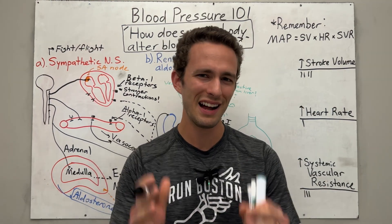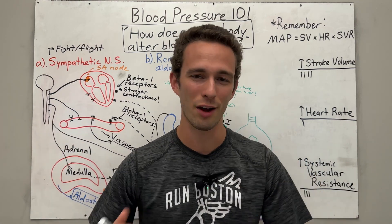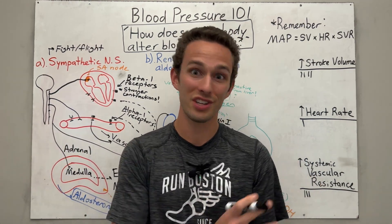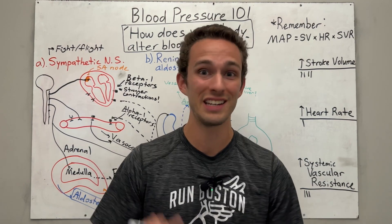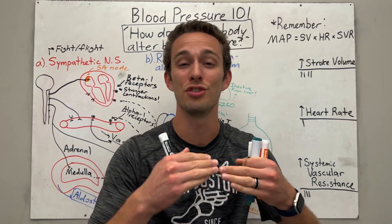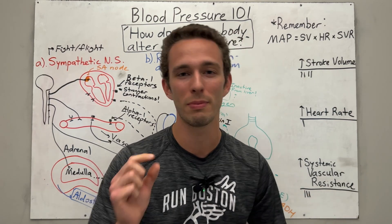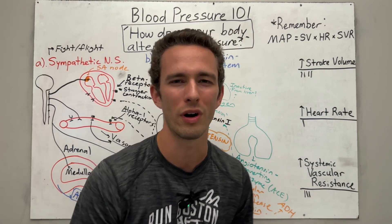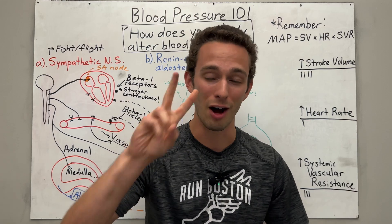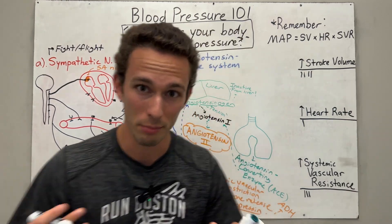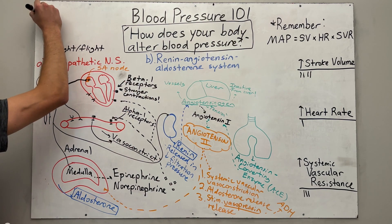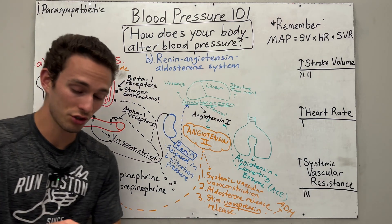Why is the body so good at raising blood pressure? Because if your cells need blood and need to be fed constantly, you need to be really good at getting blood to them. The problem is your body is very poor at actually lowering your blood pressure — in fact, I can count on two fingers how many ways your body can lower it. Number one is by parasympathetic impulses.